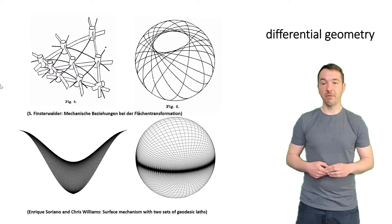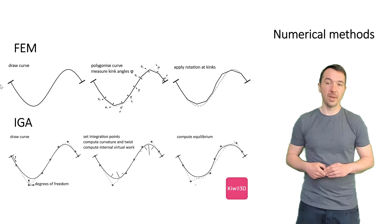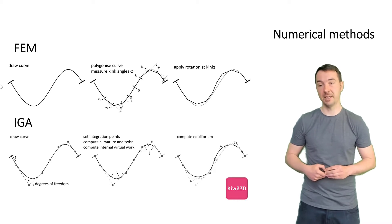Some work on the type of mechanisms we investigate has been done in the field of differential geometry. Due to the low degree of freedom, the transformation of such grids is suitable for geometric description. Our approach is to use numerical methods to describe the transformation of semi-compliant grid mechanisms. We develop methods and workflows to use either conventional finite element methods or isogeometric analysis.